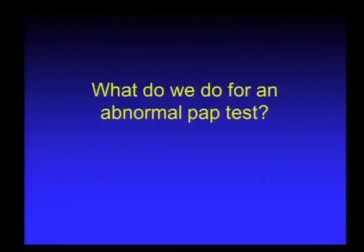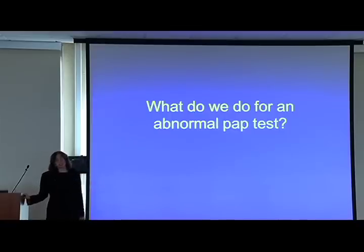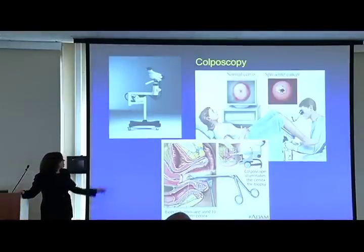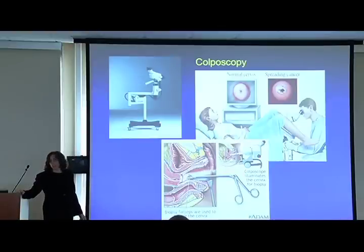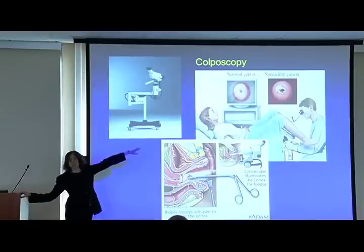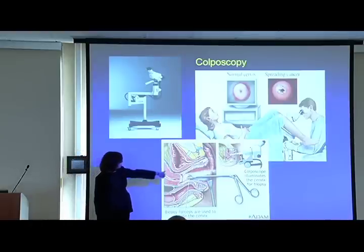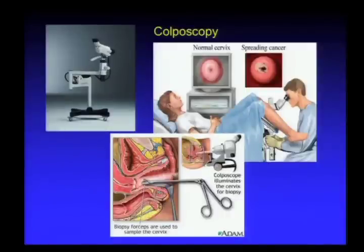After an abnormal pap test, the 29-year-old grad student was sent to see me. We perform something called a colposcopy, which uses a device that is basically a microscope on wheels at fairly low magnification. The patient is again in the lithotomy position—on their back with legs up—we insert a speculum to see the cervix. We look for certain types of changes, typically after applying white vinegar or 5% acetic acid to the cervix.